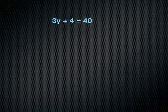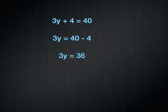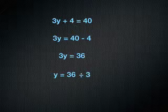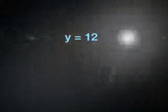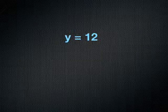3y equals 40 minus 4. Therefore, 3y is 36. Now we still have a 3 on the letter side, the y terms, and that's a times 3, and so we have to bring that across to the 36. And y will be 36, in this case, divided by 3. Therefore, our answer will be y equals 12.